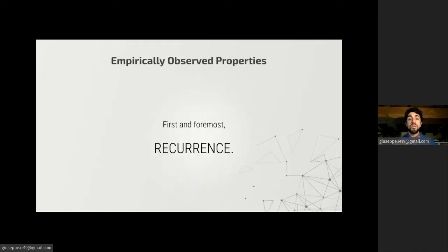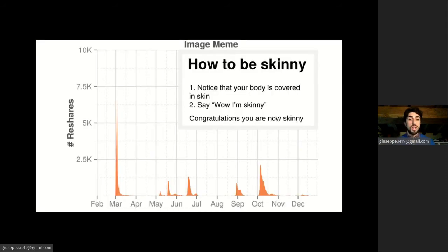The main property is recurrence. For instance, you can see in this meme from their work, they studied the number of reshares over time and they noticed that it exhibited multiple bursts of popularity with periods of quiescence in between. For instance, you can see that this meme was very popular in March and then it becomes popular again some months after that, without an apparent reason for this to happen.